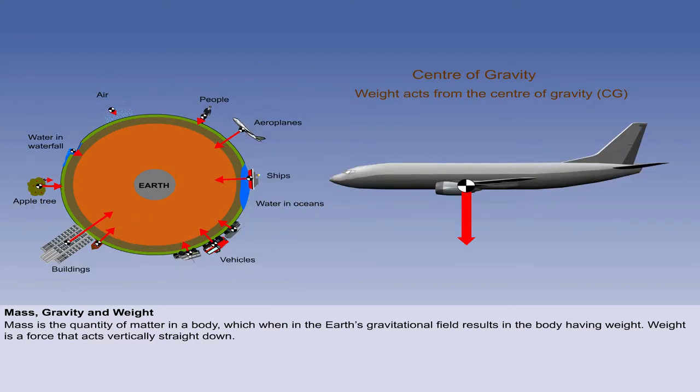The force of weight is taken to act from a single point within the body, which is called the centre of gravity. An aircraft's weight acts from its centre of gravity. For an aeroplane to maintain stable flight and have sufficient control, the aeroplane's centre of gravity must be within a safe narrow range.